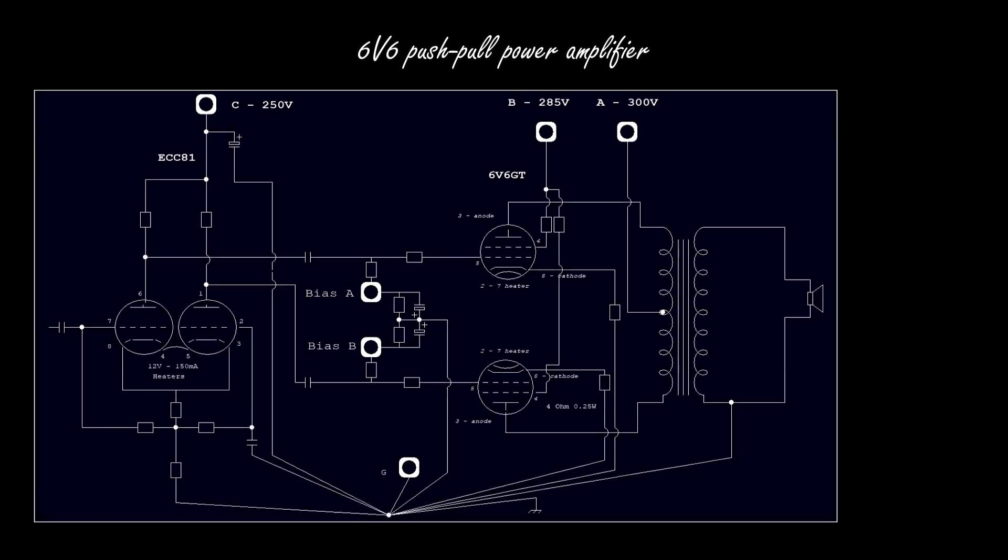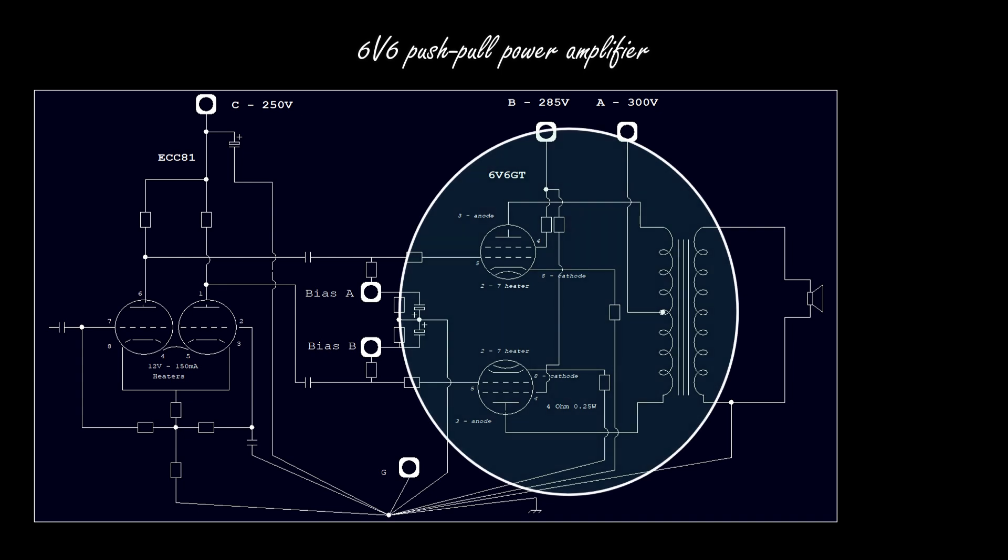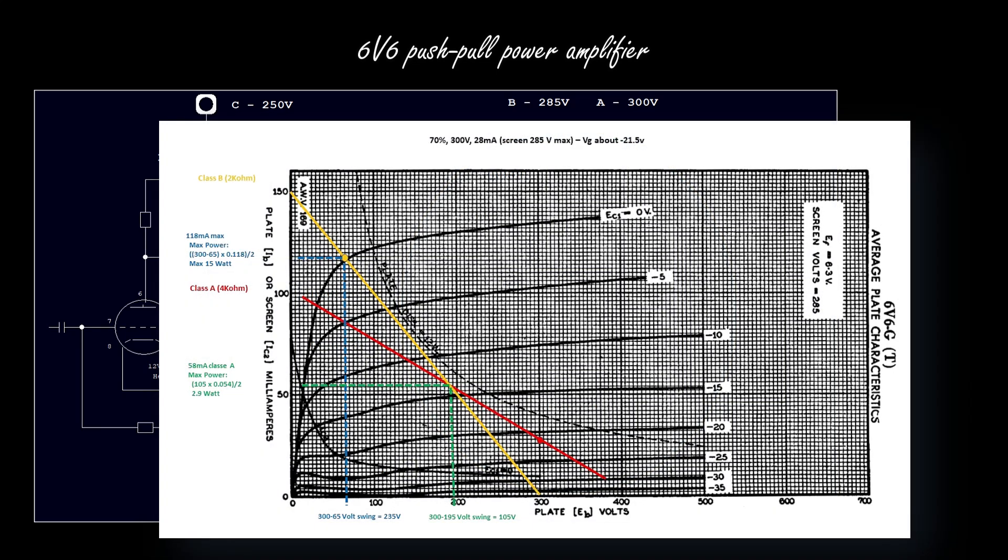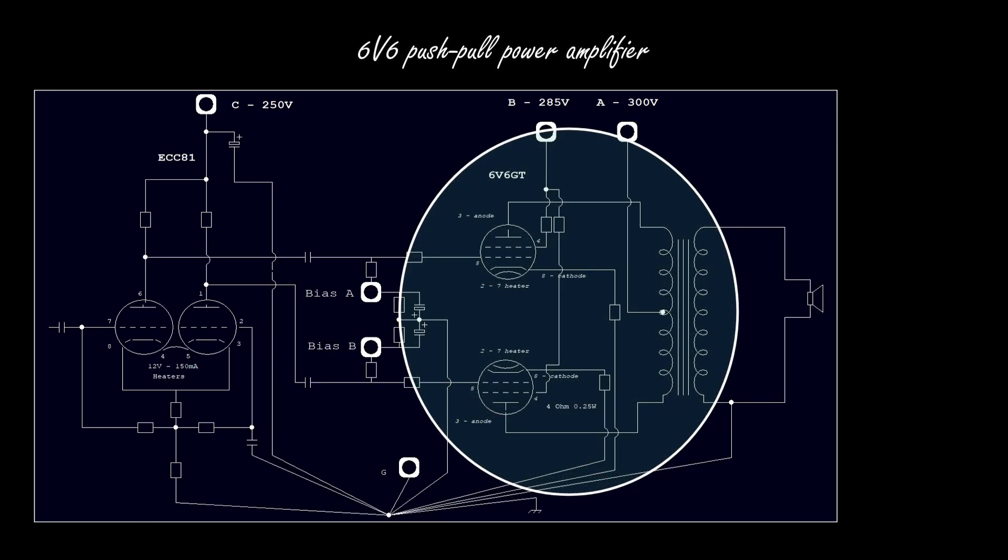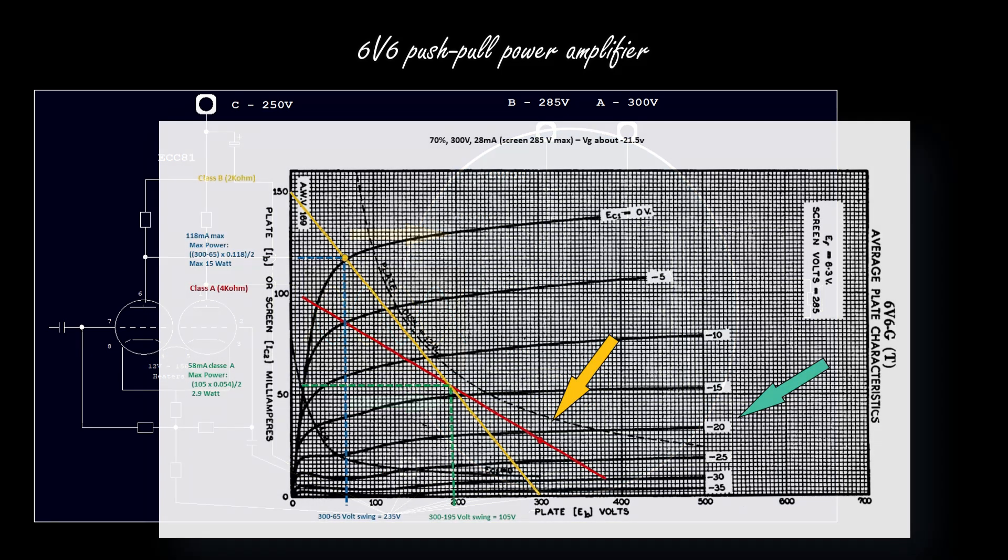We started from the design of the push-pull stage, which is based on two 6V6 power tubes, and here you can see the load lines. We have learned that in order to drive this stage at maximum power, I need to provide two phase-shifted signals, 180 degrees apart from each other, the maximum amplitude being 44 volt peak-to-peak.